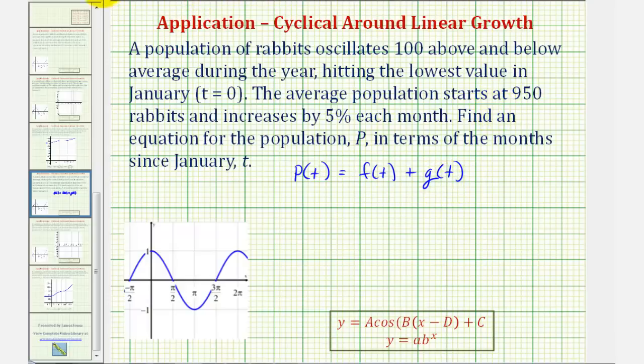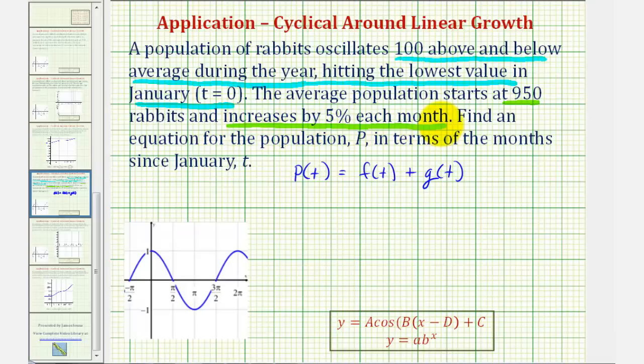So to begin, let's focus on the oscillation part, which will control the oscillation 100 above and below the average during the course of a year, hitting the lowest point at t equals zero. Once we find this part of the function, we'll then come back and find the exponential growth part, which starts at 950 and increases by 5% each year.